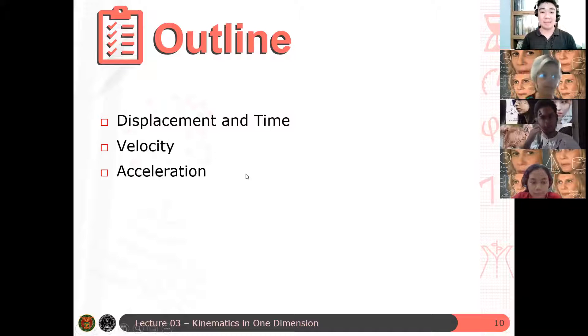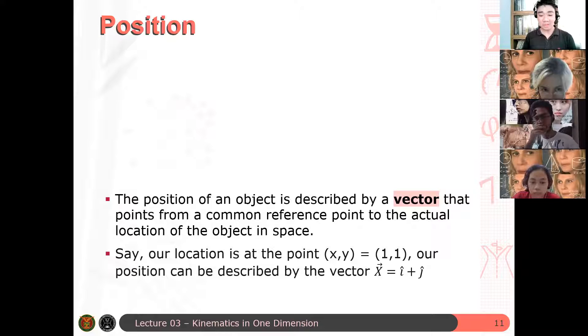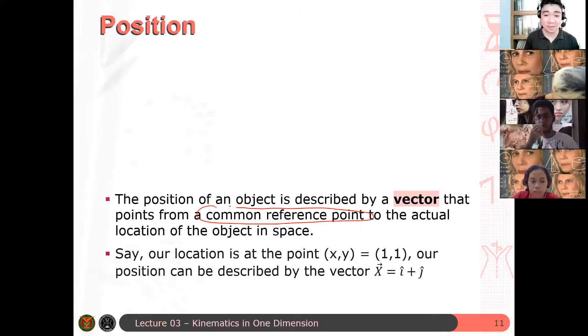We have displacement and time. So as I said kanina, you should have a coordinate system first set up before you define your position. So the position of an object is described by a vector that points from a common reference point. A common reference point is something that we all agreed upon. So dito nag-start your origin mo. And your origin is part of your coordinate system.